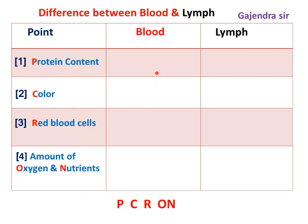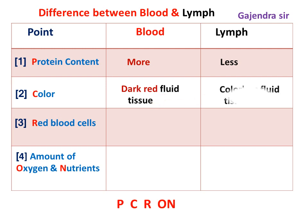In blood, protein content is more; in lymph, it is less. Color: blood is dark red fluid tissue, lymph is colorless fluid tissue. Red blood cells: present in blood, absent in lymph. Amount of oxygen and nutrients: more in blood, less in lymph.